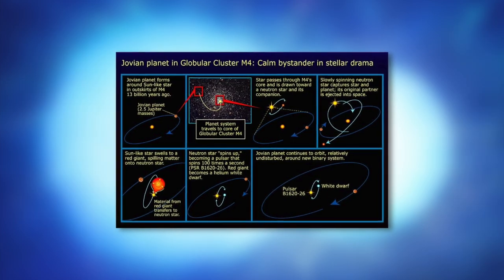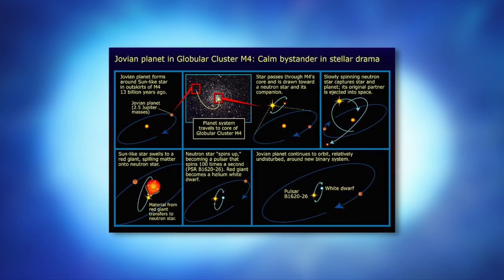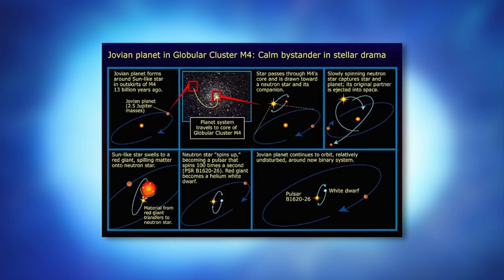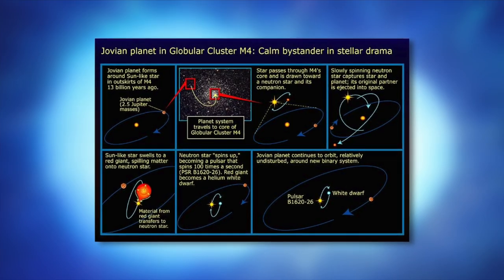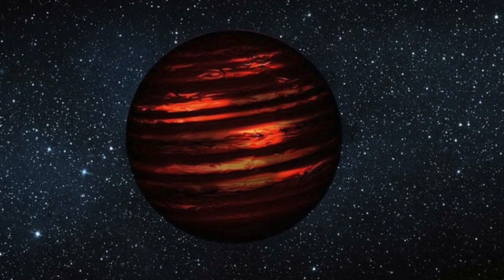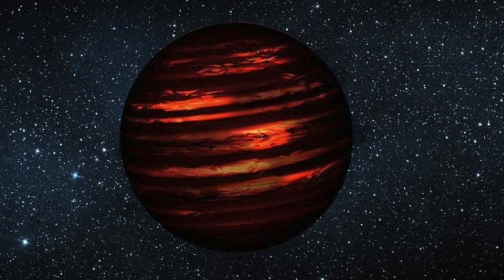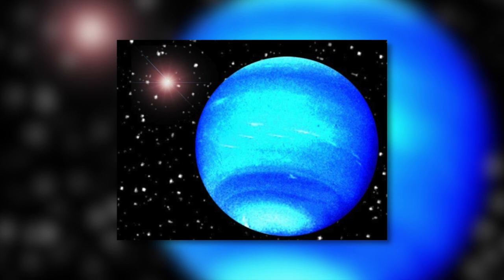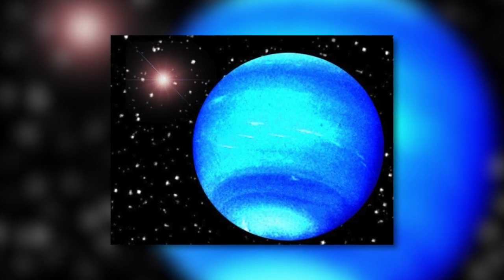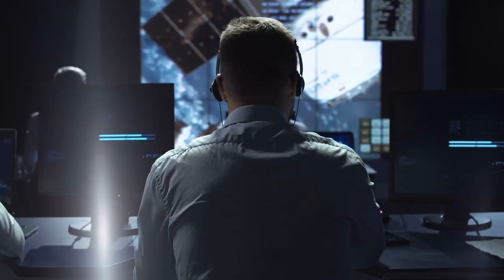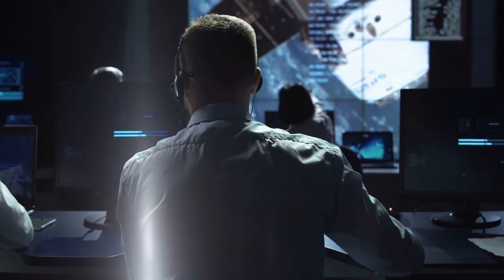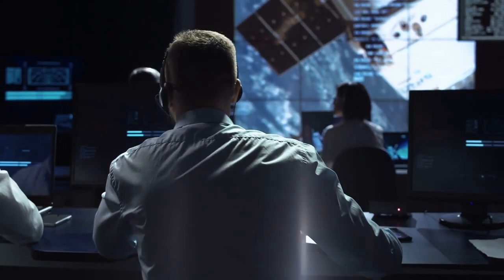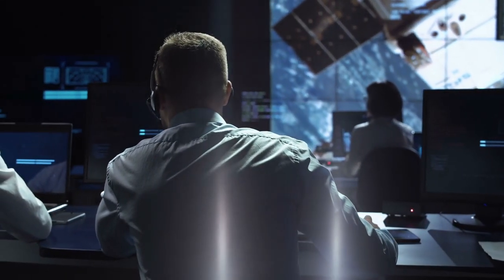Sometime later, astronomers noticed further irregularities in the pulsar, indicating that a third object was orbiting the others. This new object was thought to be a planet, but they also speculated on a brown dwarf or a solid-state star. The debate about its true identity continued into the 1990s. The debate was ended when astronomers were finally able to measure the planet's true mass through ingenious celestial detective work.